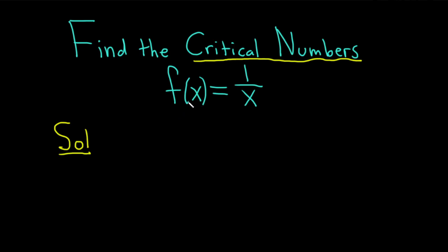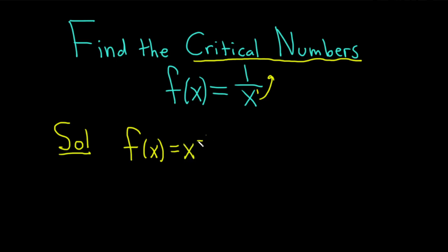Let's take the derivative and investigate what happens. Before we take the derivative, because we have a fraction with a number in the numerator, we can bring this upstairs. When you do that, the exponent on the x becomes negative. So this is x to the negative 1. We're rewriting it in a way that allows us to use the power rule from calculus to differentiate.